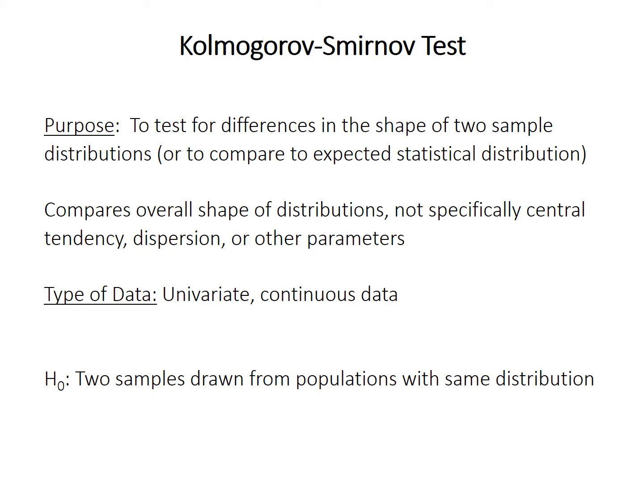The test, in R at least, requires univariate continuous data. The null hypothesis for the two-sample test is that the two samples were drawn from populations with the same distribution — they should have the same cumulative distribution function.